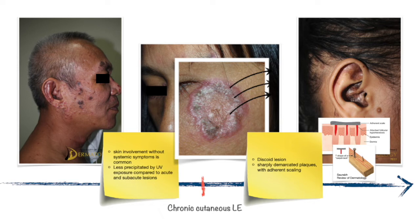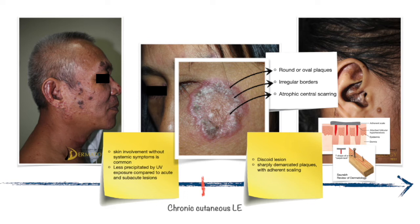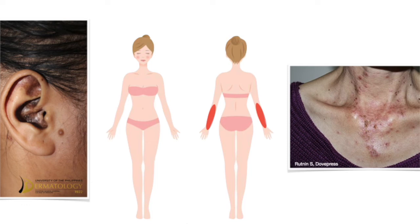Plaques are round or oval, may have central clearing, or appear as multiple coalescing circles with irregular borders that expand in the periphery and regress in the center, resulting in atrophic central scarring, telangiectasia, and hypopigmentation. DLE lesions are most frequently encountered on the face, scalp, ears, the area of the neck, and extensor aspects of the arms.